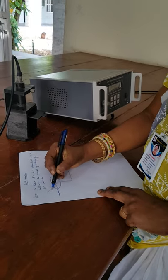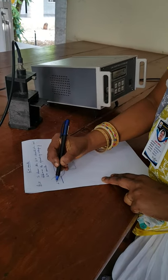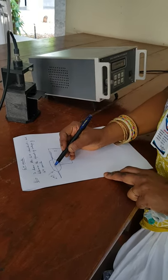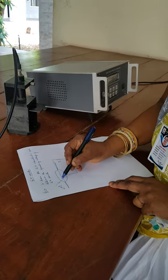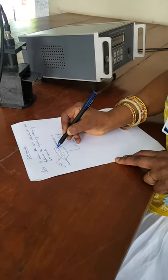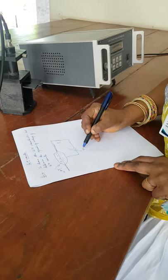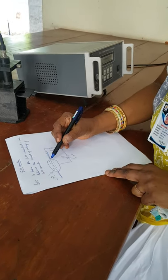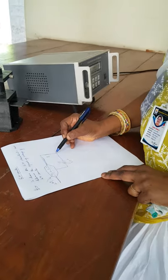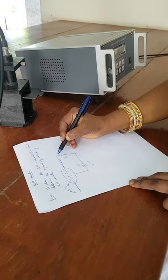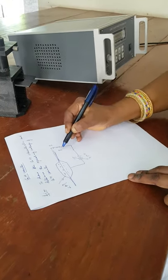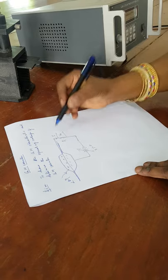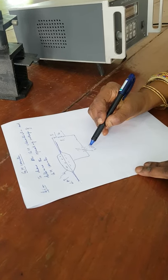Whenever an alpha particle or beta particle enters the ionization chamber — in the theory we have learnt that this contains a gas and alcohol — it ionizes the gas into positive and negative ions. If you have a voltage greater than zero, at a particular voltage these ions will start flowing to their respective opposite polarities, constituting a current I. When I passes through a resistance R, there is an output voltage V.